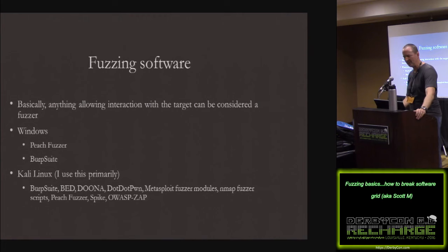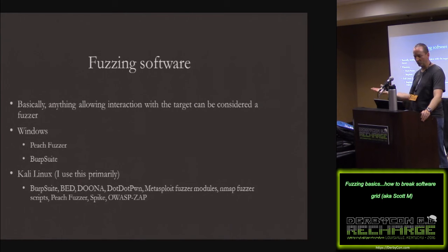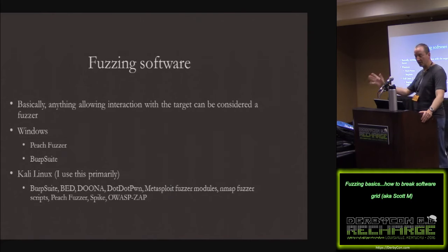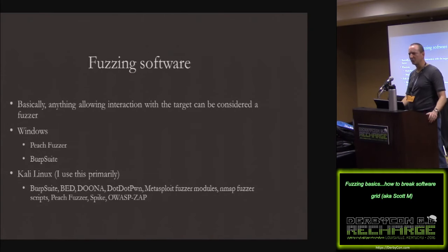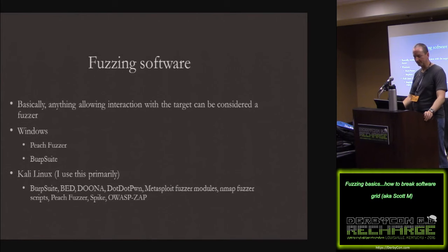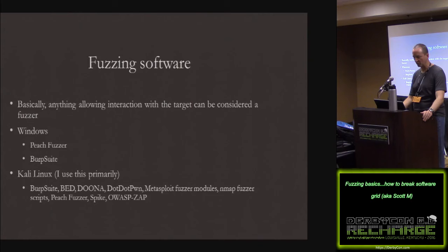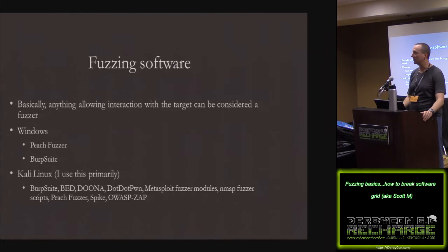Software. Basically, anything allowing interaction with your target can be considered a fuzzer. For Windows, the two that I've used are Peach Fuzzer — the community edition — and Burp Suite. I mostly use Kali: Burp Suite, BED, Doona, Dot Dot Pwn, those other ones. Spike and OWASP ZAP — the Nmap fuzzer scripts are pretty decent.